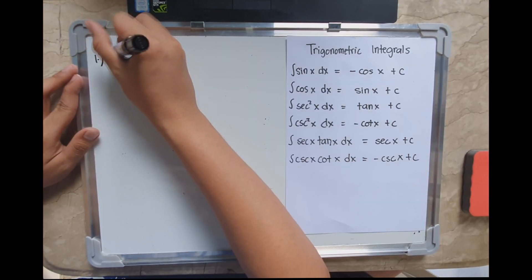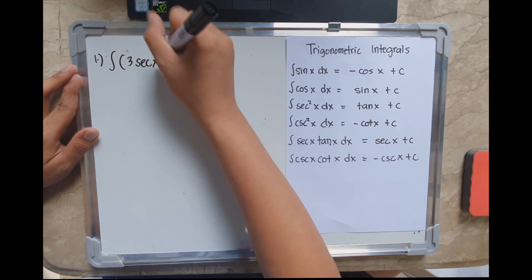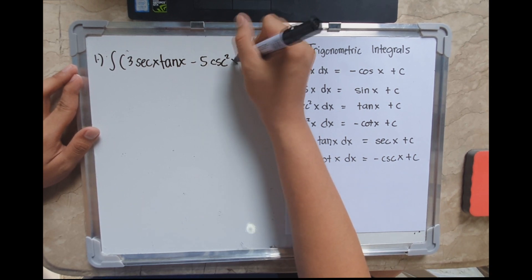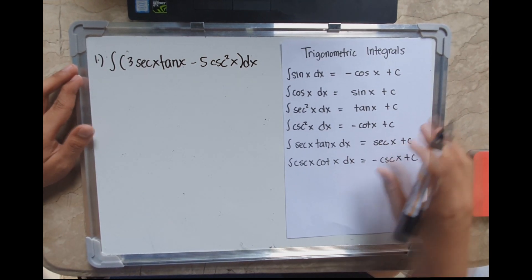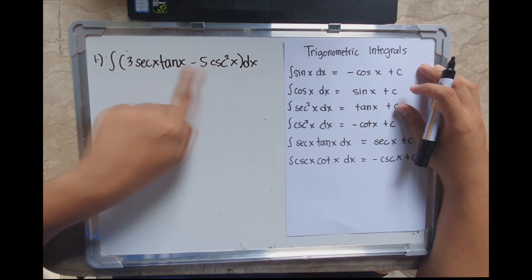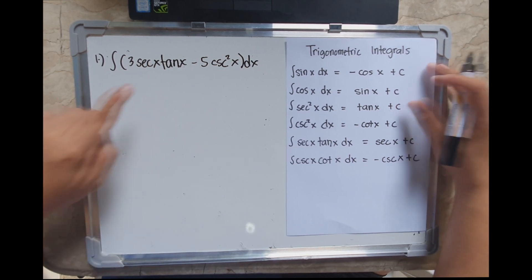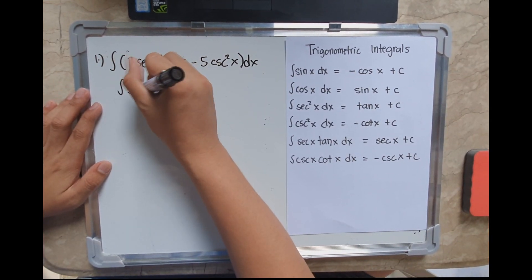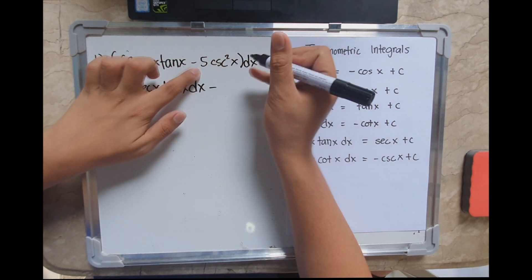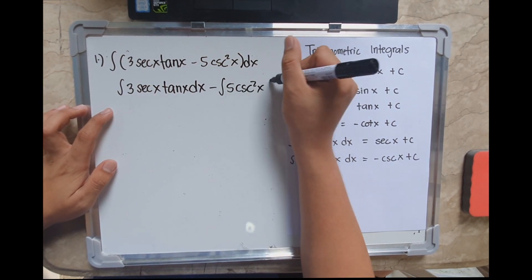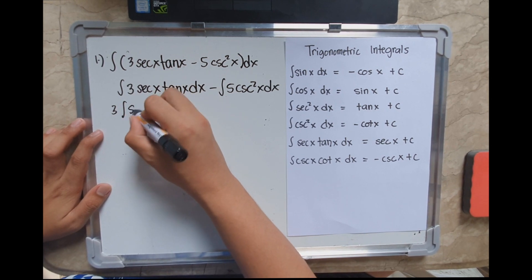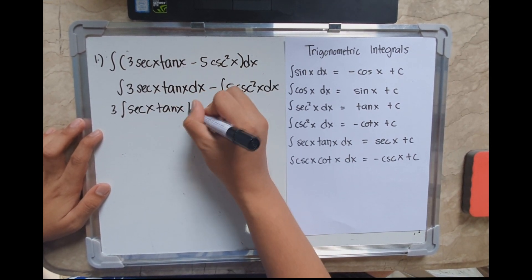Let's start with the integral of 3sec(x)tan(x) minus 5csc²(x) dx. We've already known the general theorems — we will be distributing the integral symbol to each of the terms. We now have the integral of 3sec(x)tan(x) dx minus the integral of 5csc²(x) dx. Constants 3 and 5 can be factored out.